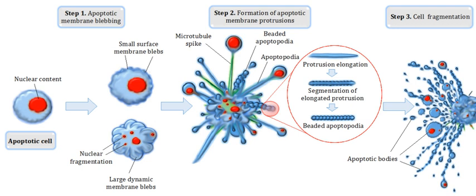Two types of blebs are recognized in apoptosis. Initially, small surface blebs are formed. During later stages, larger so-called dynamic blebs may appear, which may carry larger organelle fragments such as larger parts of the fragmented apoptotic cell nucleus.